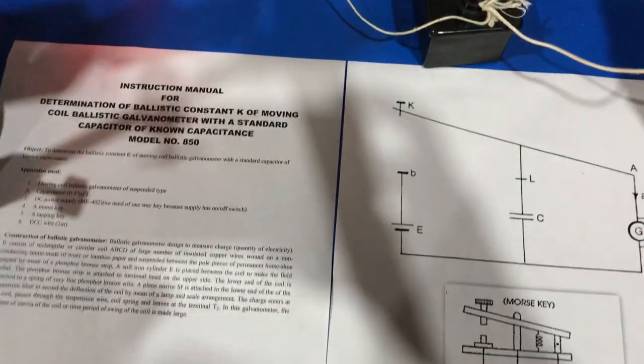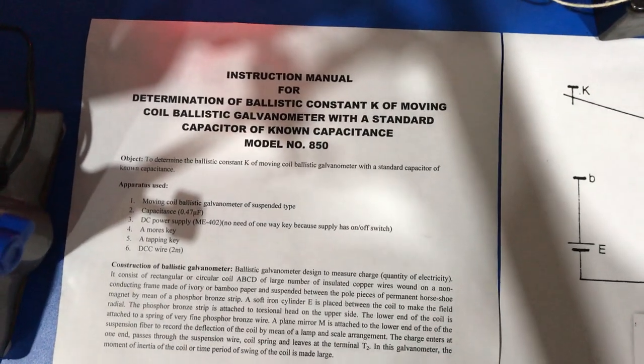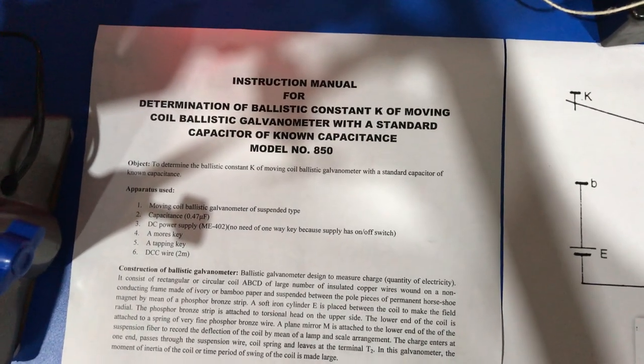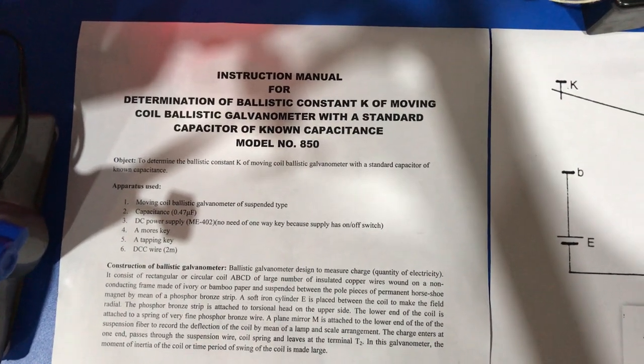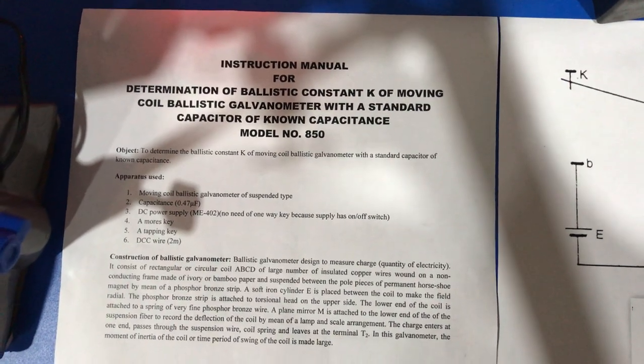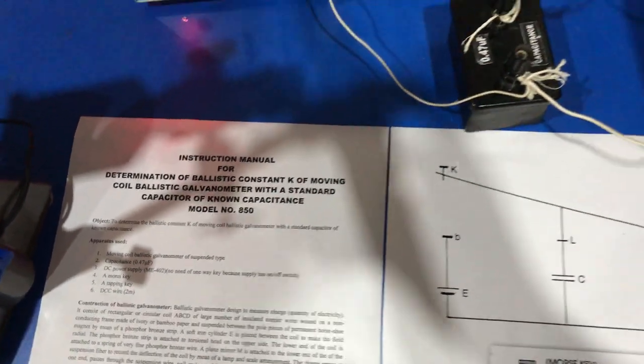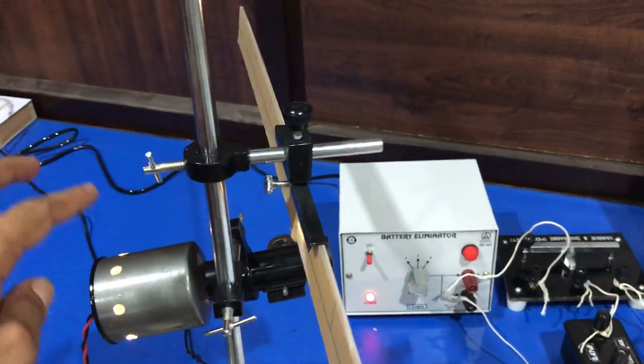Hello everyone, today I'm going to demonstrate how to determine the ballistic constant of a moving coil ballistic galvanometer with a standard capacitor of known capacitance. In order to perform this experiment, we require a ballistic galvanometer, lamp and scale arrangement for the galvanometer.